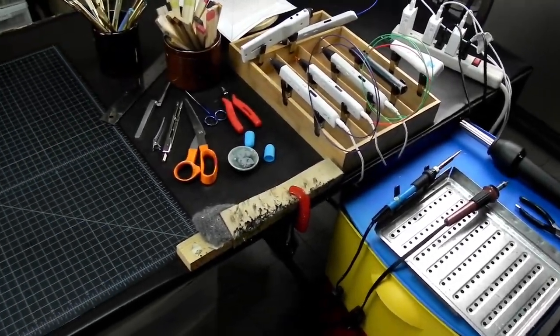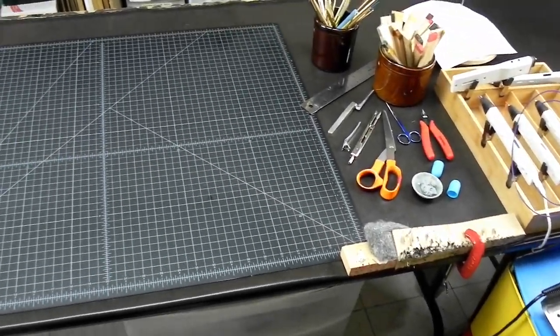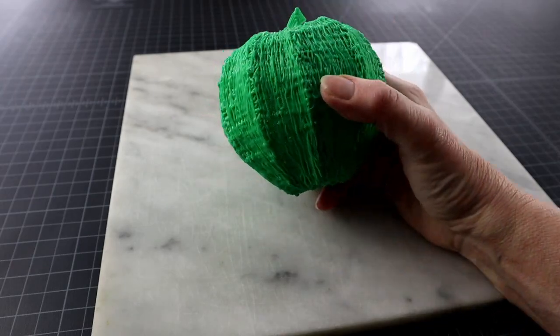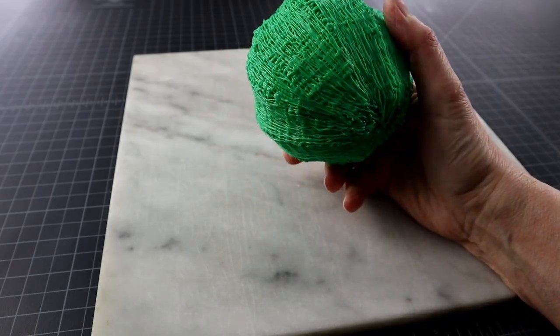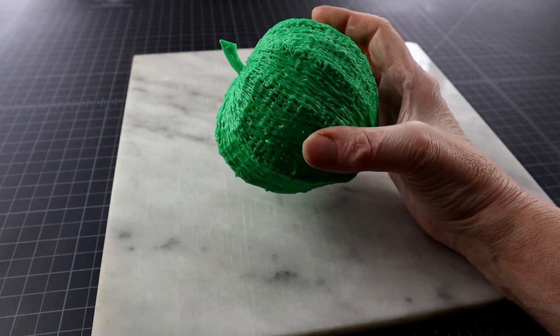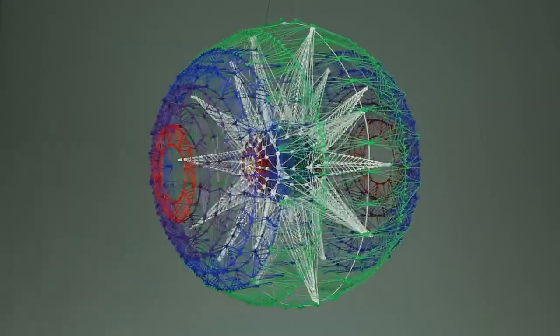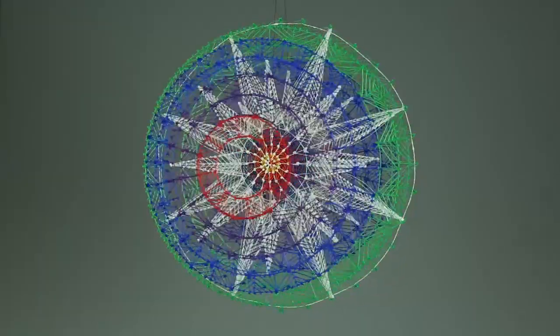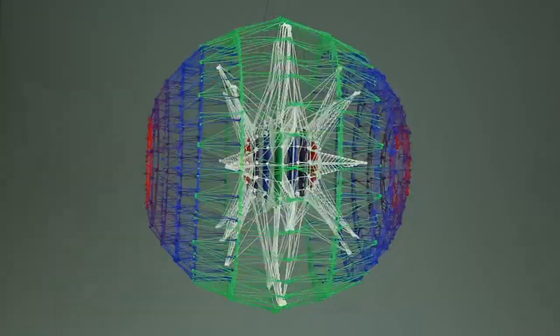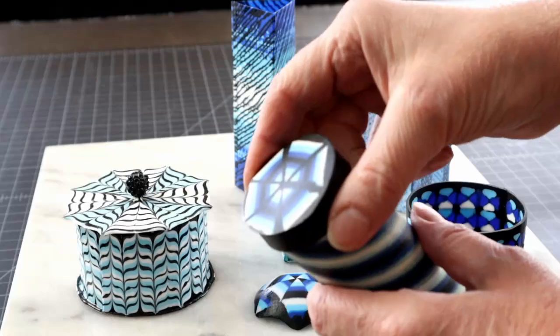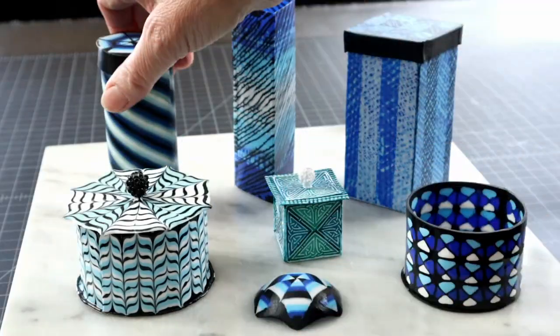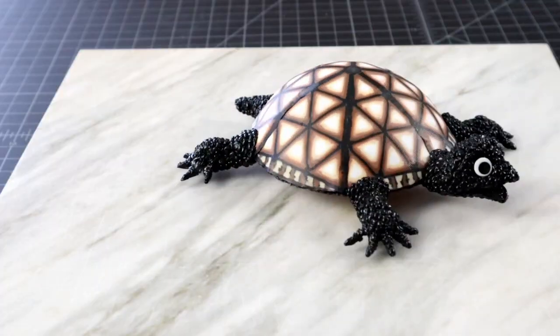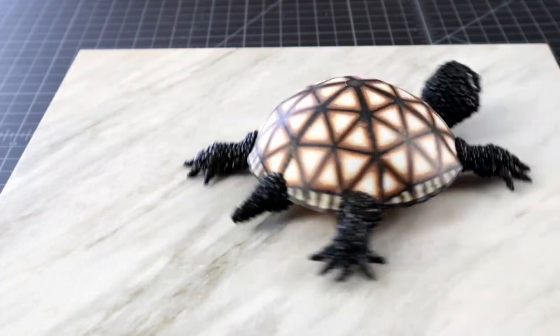When I first started to work with 3D pen, it bothered me that all the pieces had the same stringy texture surface look. You can avoid this issue for a while as I did by working only linear and avoiding solid objects. But there are strategies which allow you to have a solid object with pretty much any finish you like. So let's look at those.